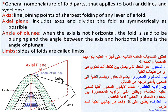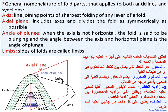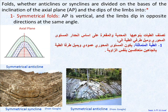Fold anatomy: 1. Axis — the line joining points of sharpest folding of any layer of a fold. 2. Axial plane — includes axes and divides the fold as symmetrically as possible. 3. Angle of plunge — when the axis is not horizontal, the fold is said to be plunging, and the angle between the axis and the horizontal plane is the angle of plunge. 4. Limbs — the sides of folds are called limbs.